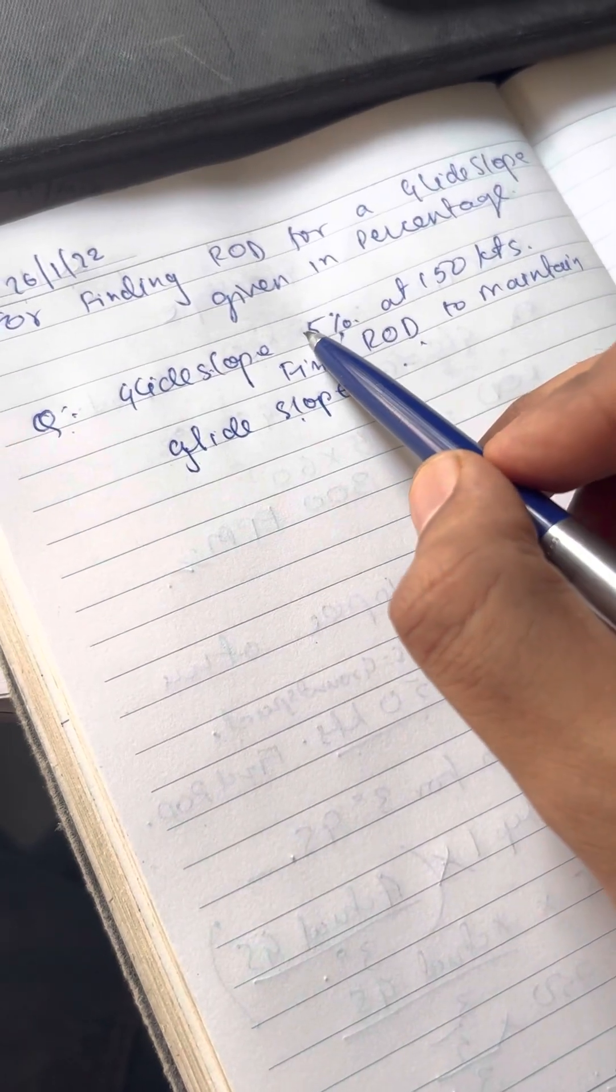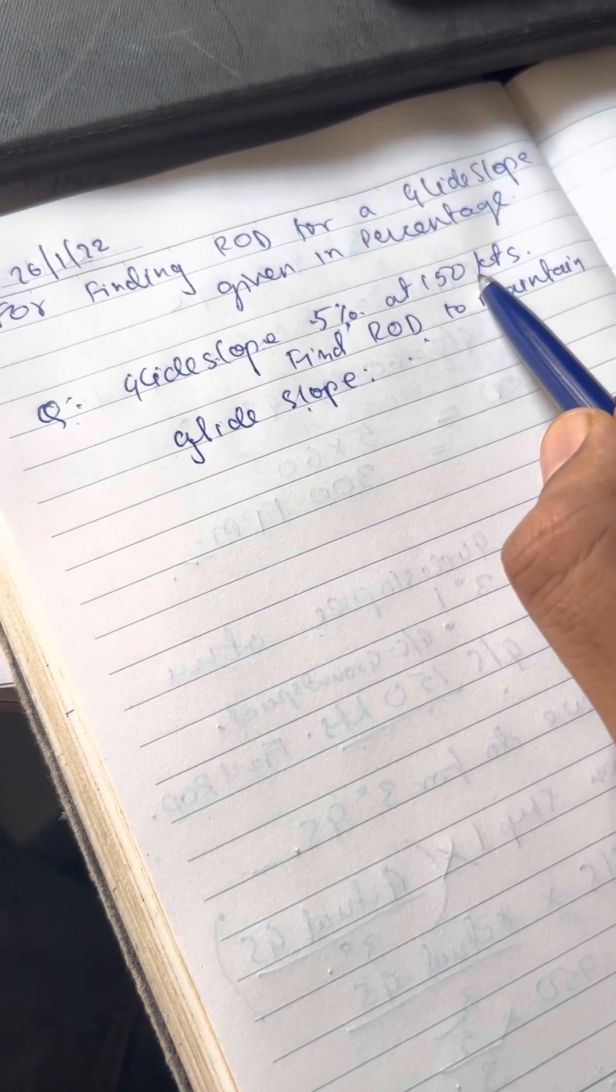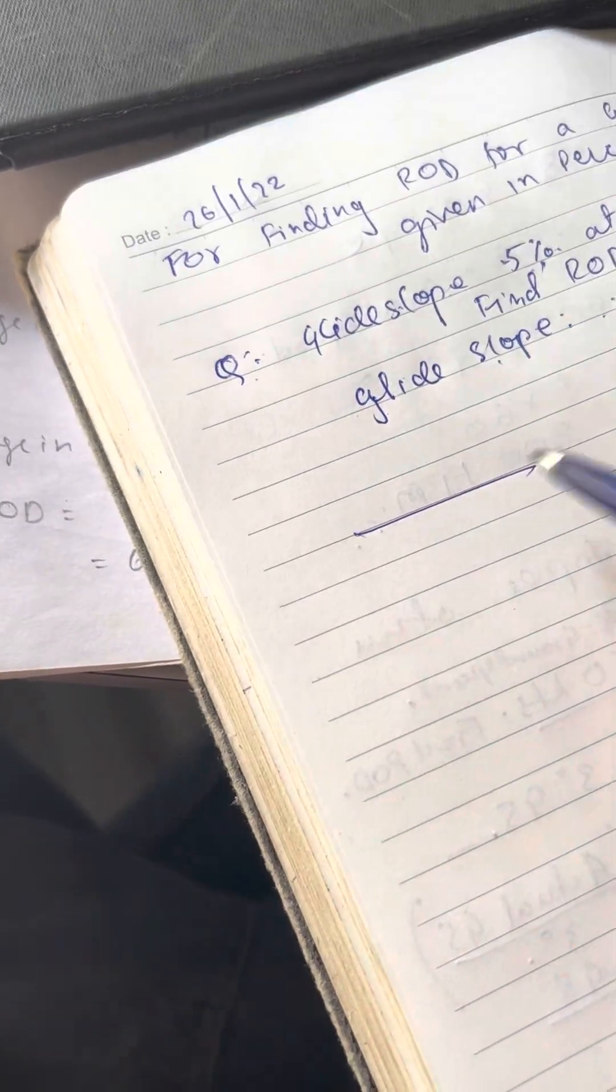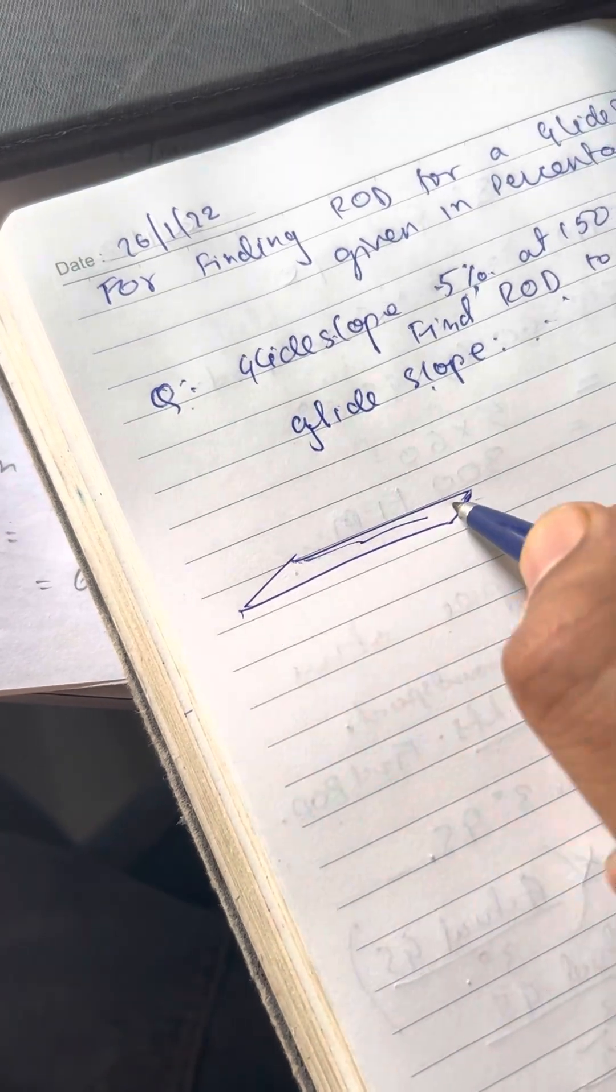Now, 5% glide slope and at a ground speed of 150 knots, how to find ROD. So we understand it quickly, and this is our runway touchdown.